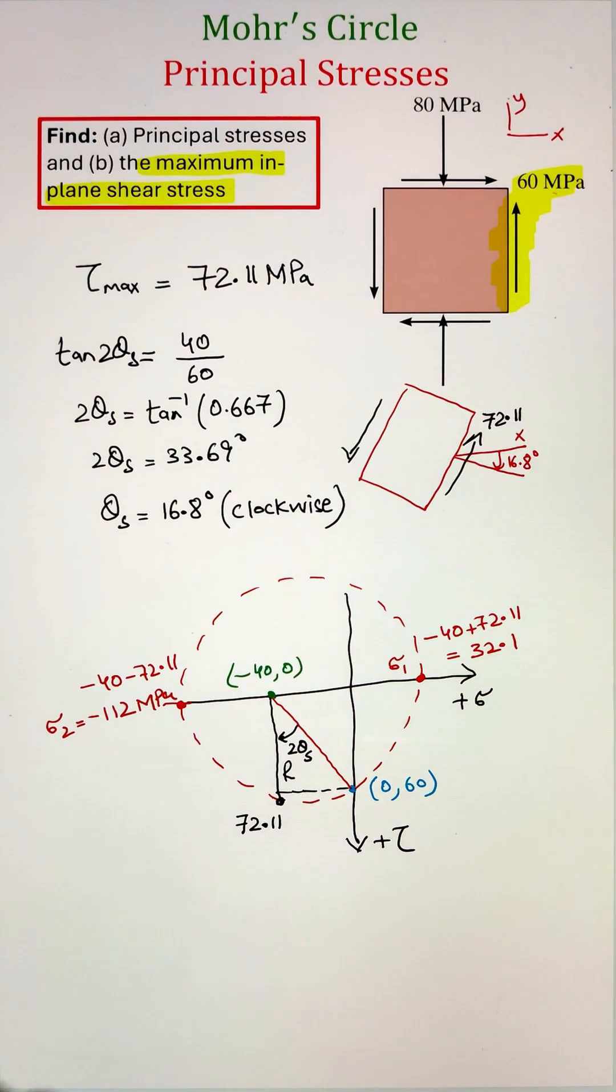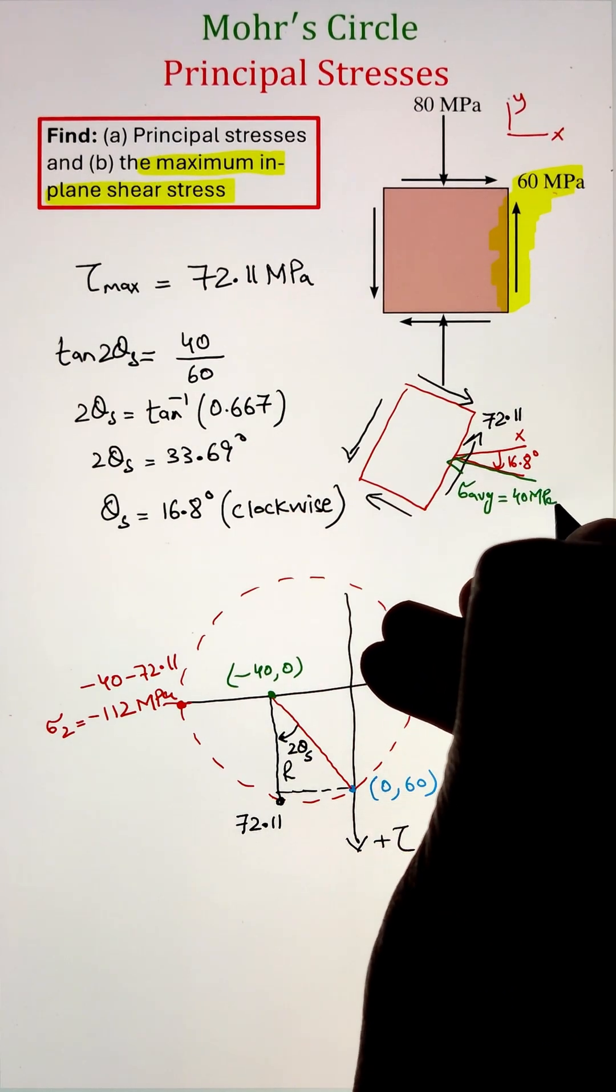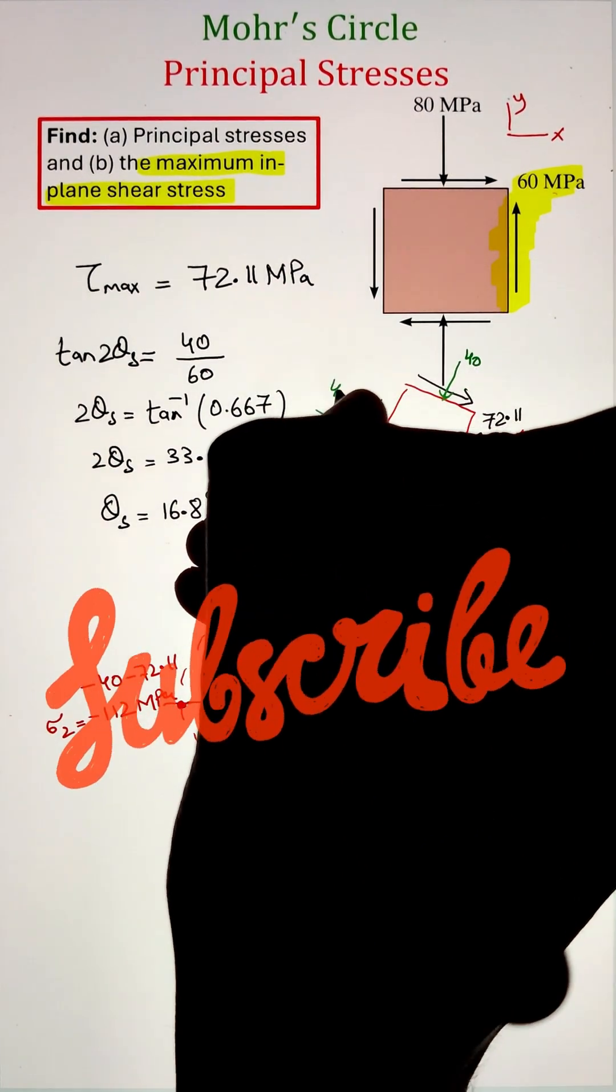Since tau max is positive, that's why it acted upward on the right-hand side of the square. Also, we know that the plane at which the maximum in-plane shear stress occurs, the normal stress is the average stress. In this case, it is negative 40 megapascal.